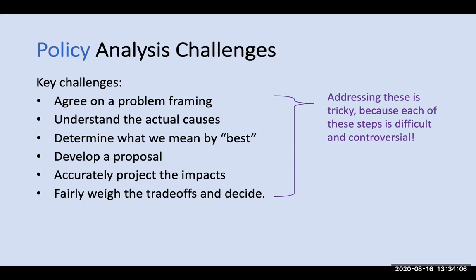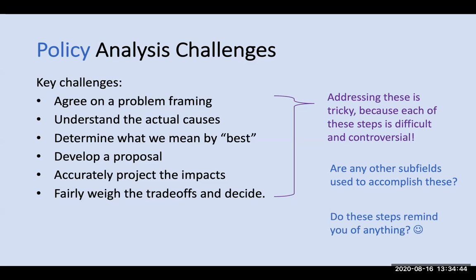To carry out these steps or address these challenges, we often need to draw on other fields. To perform a quality policy analysis, you need to have at least some understanding of the policy process and some ability to evaluate the impacts or draw on evaluation research. Also worth noting, we've got six bullets here and eight steps in the Bardock and Potashnik eightfold path — do you see any similarities?